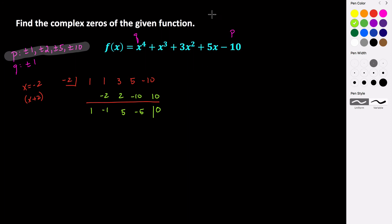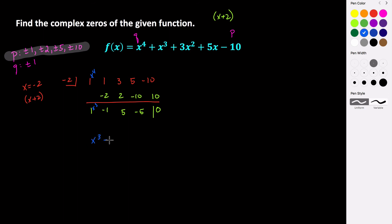So if we're going to write this in factored form, we have x plus two as one of our factors. Remember this was a fourth degree polynomial — x to the fourth — which gives us now this cubic. We can continue to use synthetic division, but actually this cubic is factorable by grouping, which is pretty nice. So this would be our cubic: x cubed minus x squared plus five x minus five.